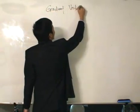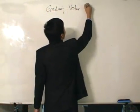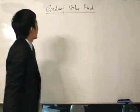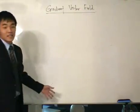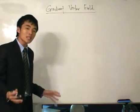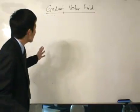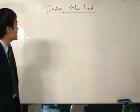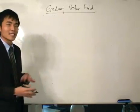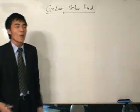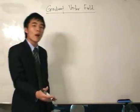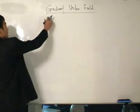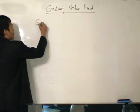Gradient vector field. Ever since we started vectors and this chapter of differential vectors, we have always been dealing with vector fields — single variable and multi-variable — where we put in a point or parameter and get a vector. Now, gradient vector field is different: we will get a gradient vector field from what we call a scalar field.